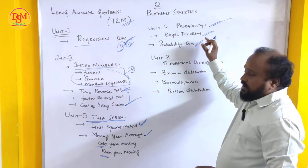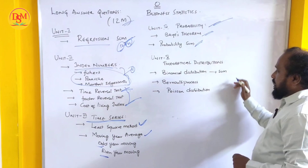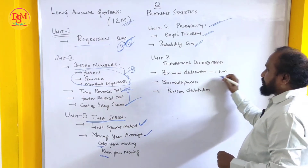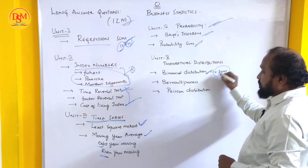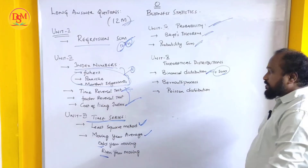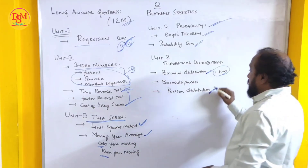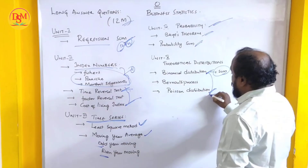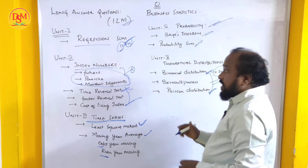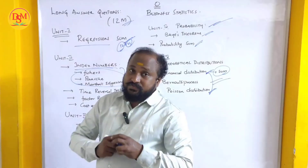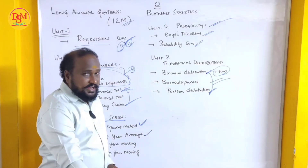Unit number 5 is Theoretical Distribution. Binomial Distribution is compulsory — one sum will definitely be asked from Binomial Distribution and the Bernoulli process. Poisson Distribution is also confirmed. Two questions from Unit 5: one from Binomial Distribution and one from Poisson Distribution.